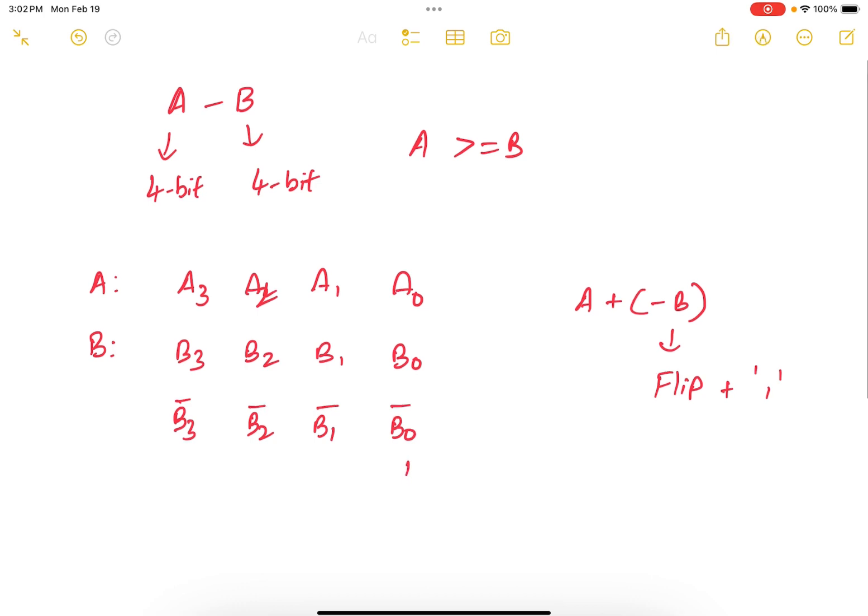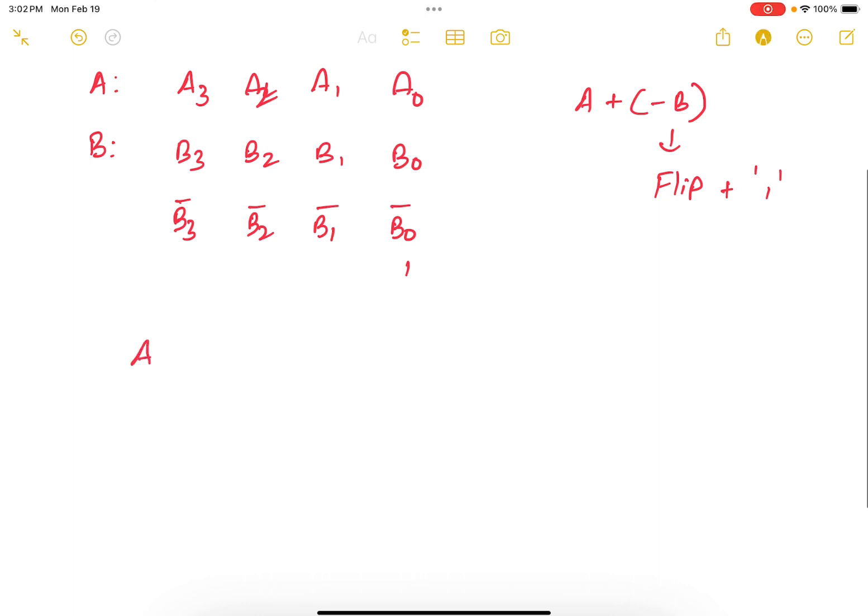So you have the circuit as A3, A2, A1, A0, B3 prime, B2 prime, B1 prime, and 1. And now you can add it up.